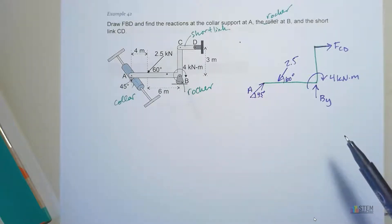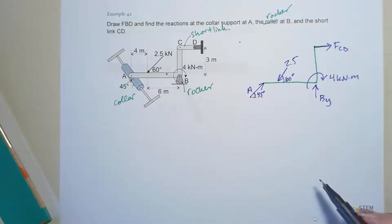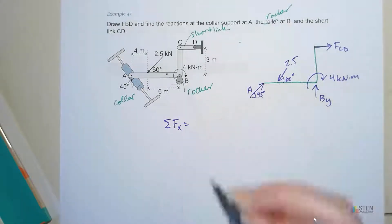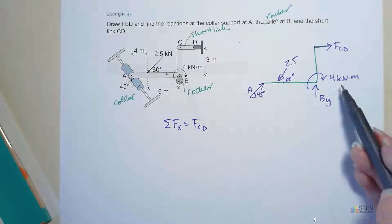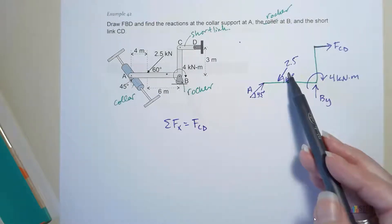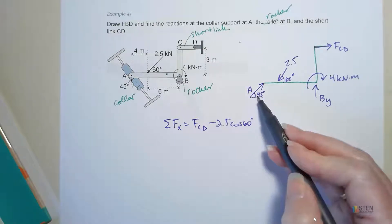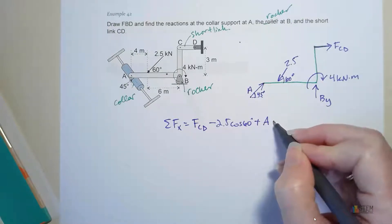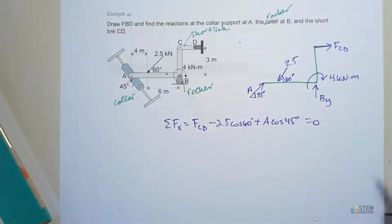Now we can do our equilibrium equations using the basic ones — sum of forces in two directions, then a moment about a point. For the X direction: we've got FCD, then negative 2.5 cosine 60 for the applied force pointing left, and A cosine 45 for the collar's x-component. Set that equal to zero. Notice we have two unknowns, so we can't solve for anything yet — we'll hang on to that equation.